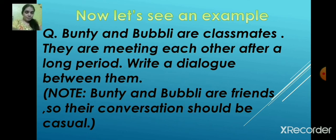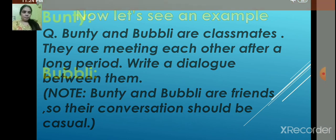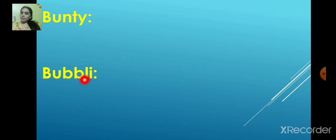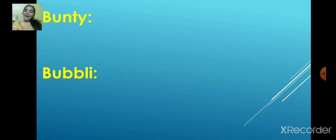So Bunty says: 'Hello Bubbly! How are you?' — notice the exclamatory mark showing expression. And the question mark on 'How are you?' shows it is a question. Bubbly replies: 'I am good. What about you, Bunty?' Then Bunty asks: 'Where have you been? It's been a long time.' — notice the contraction 'it's' used as a short form.